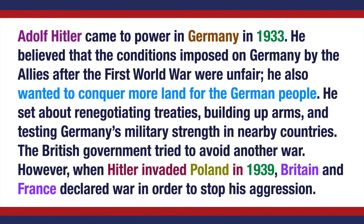Adolf Hitler came to power in Germany in 1933. He believed that the conditions imposed on Germany by the Allies after the First World War were unfair. He also wanted to conquer more land for the German people. He set about renegotiating treaties, building up arms, and testing Germany's military strength in nearby countries. The British government tried to avoid another war. However, when Hitler invaded Poland in 1939, Britain and France declared war in order to stop his aggression.